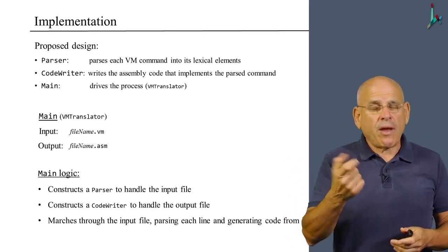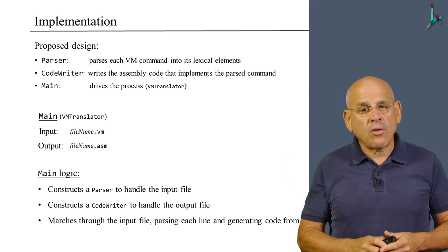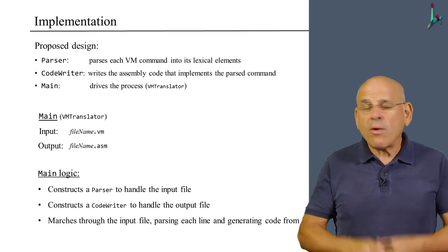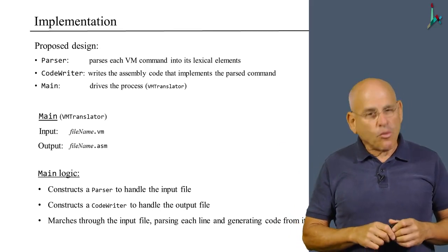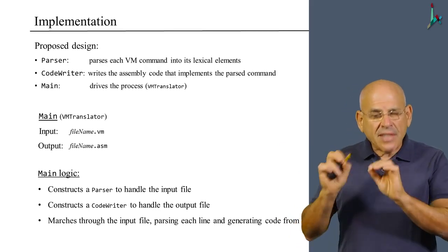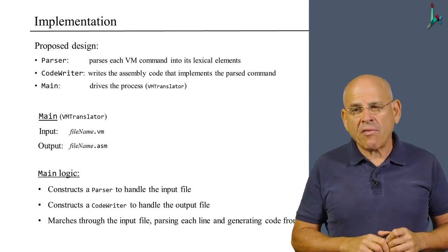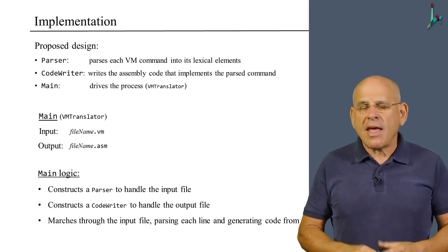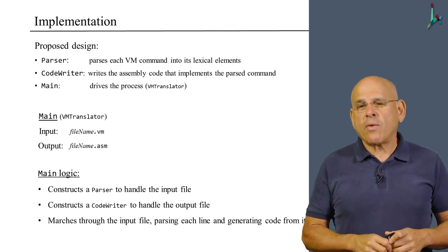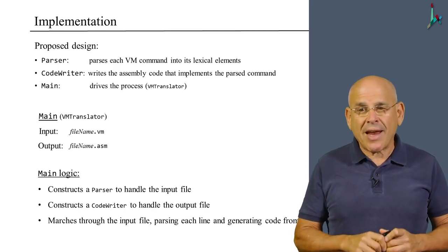And once we parse this line into its constituent VM elements, we can pass this information to the code writer in order to generate the appropriate code in assembly that we will later put together and write to the output file. So that's the general logic of the main class called VMTranslator. And that's what you have to implement when you develop this particular class.